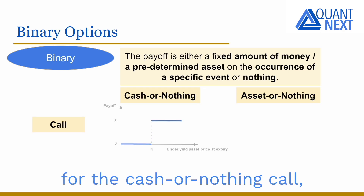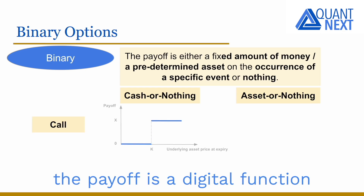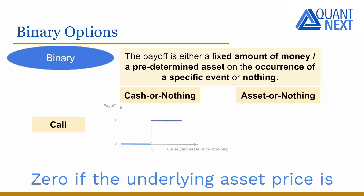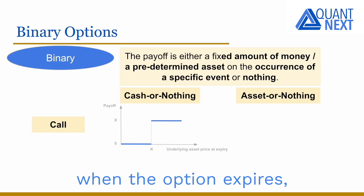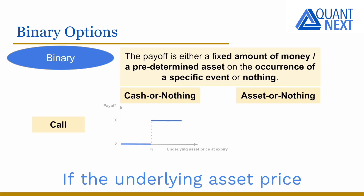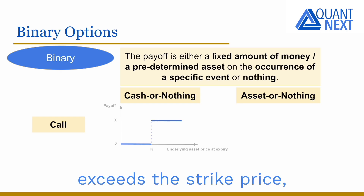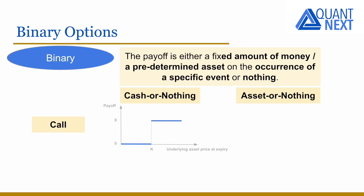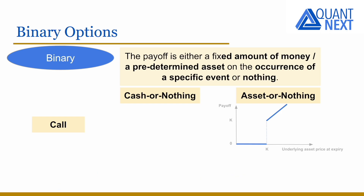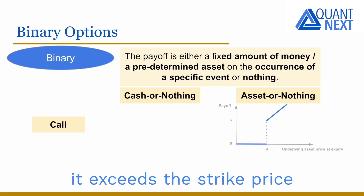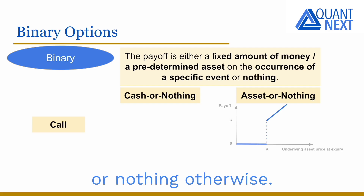For the cash or nothing call, the payoff is a digital function with two possible values: zero if the underlying asset price is below the strike price when the option expires, or one fixed level if the underlying asset price exceeds the strike price, no matter how high it is. For the asset or nothing call, the payoff is the underlying asset price if it exceeds the strike price, or nothing otherwise.